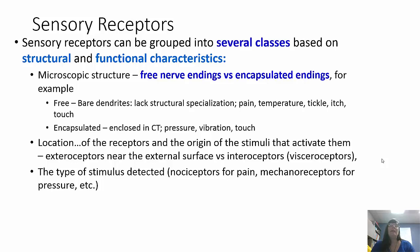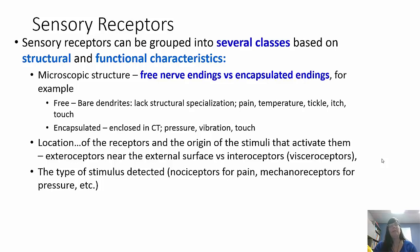Receptors can also be categorized by location — either exteroceptors near the external surface, or interoceptors which are internal. They can also be categorized by the type of stimulus detected: nociceptors for pain, mechanoreceptors for pressure, and a variety of others.